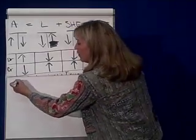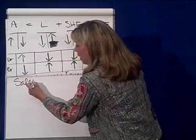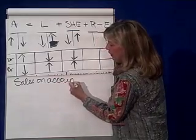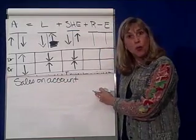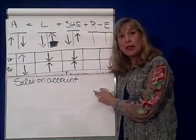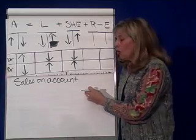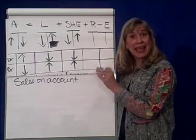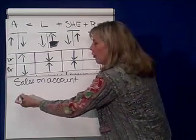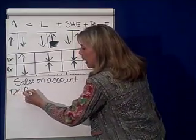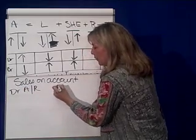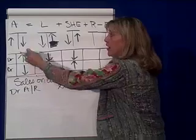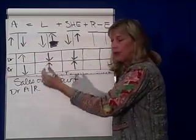If I have a sales on account, in other words they give me a credit card number, how would I communicate that in English? Well, sales on account says which asset is going up? It's accounts receivable. So I would be debiting accounts receivable for $10 because the asset accounts receivable is increasing.